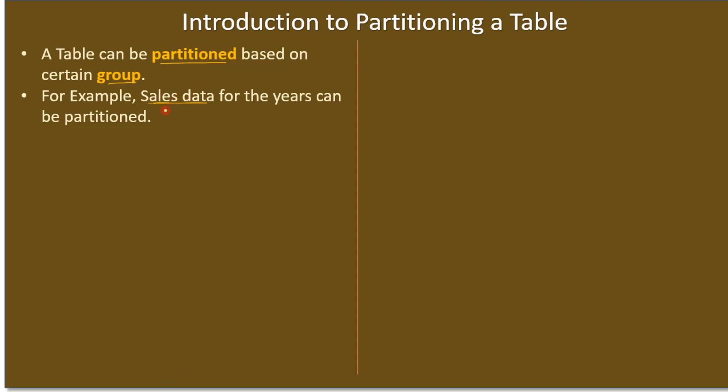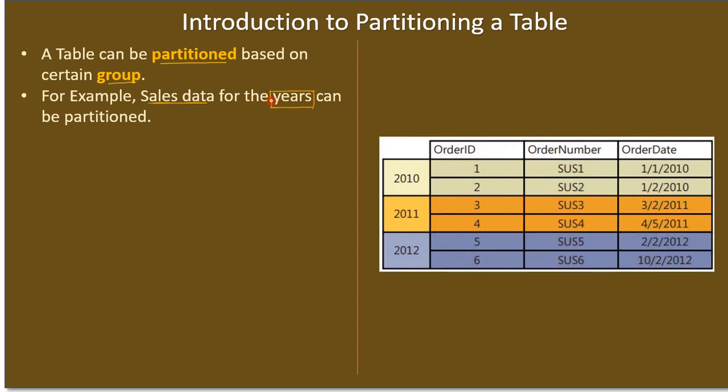A particular table stores sales data for years, and the table can be partitioned. If you see the group here, it is the year. Here you can see there are three columns we took for example: Order ID, Order Number, and Order Date. If these orders are on specific dates, the date can be grouped based on the year.